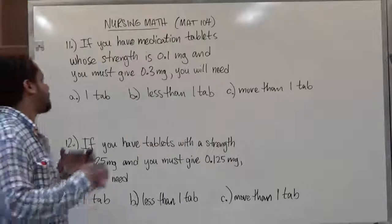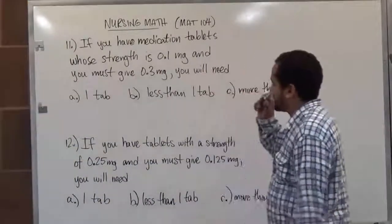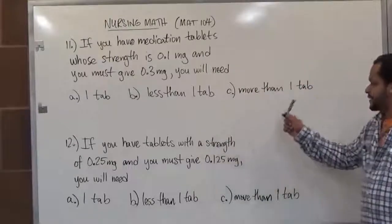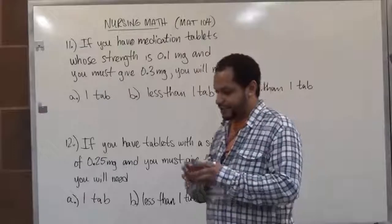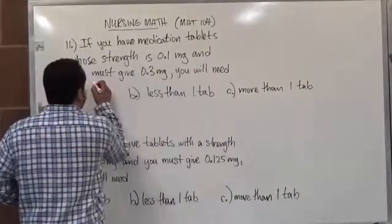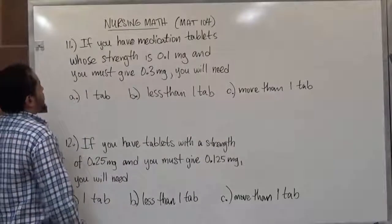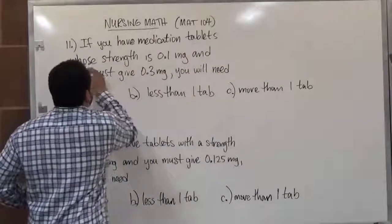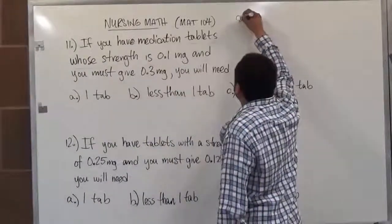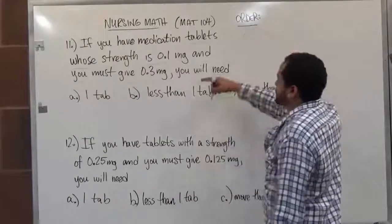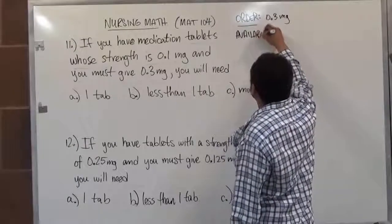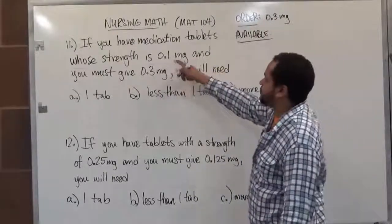In question number 11, it says: if you have medication tablets whose strength is 0.1 milligrams and you must give 0.3 milligrams, you will need A) one tab, B) less than one tab, or C) more than one tab. The best method to use is the dosage calculation. We take our order — 0.3 milligrams — and the strength of each tablet is 0.1 milligrams, which is our available dosage of 0.1 milligrams per tablet.